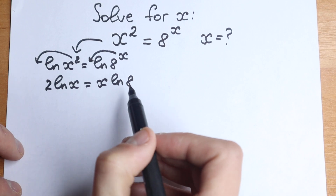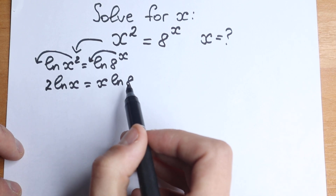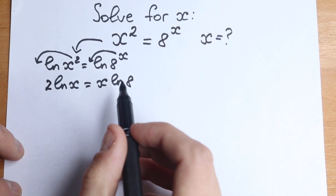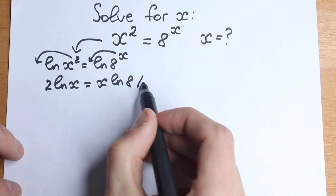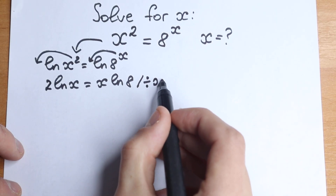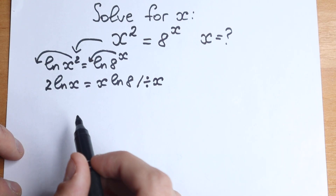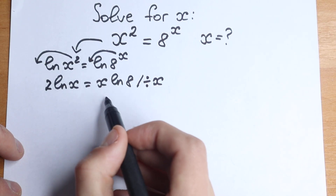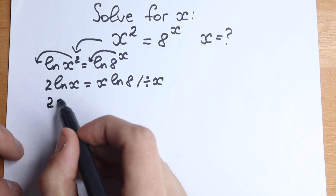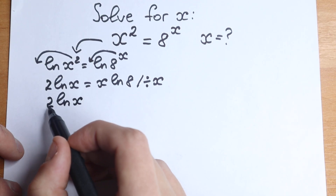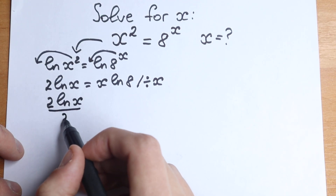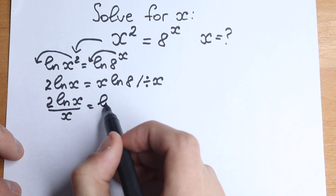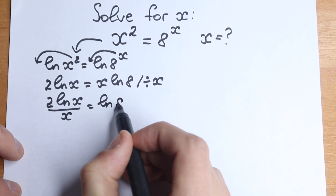Let's group our constants on the right hand side and our variables on the left hand side. For this, let's divide both sides by x. The x cancels, so we have 2 times natural log x divided by x on the left hand side, and natural log 8 on the right hand side.